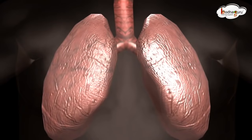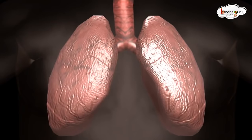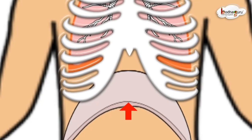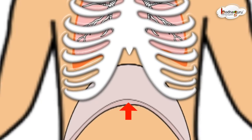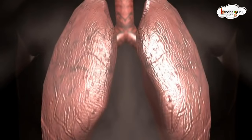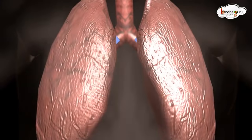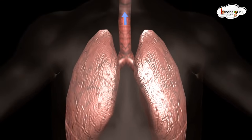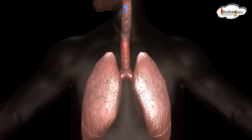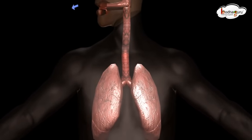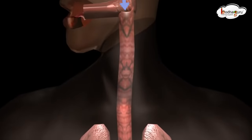जिससे lungs फूल जाते हैं। जब डायफ्राम ऊपर की ओर जाता है तो lungs पर ज्यादा दबाव पड़ता है और वायू lungs से बाहर निकल जाती है। वायू जिस रास्ते से शरीर में प्रवेश करती है उसी रास्ते से बाहर निकल जाती है — यानि lungs से bronchi में, फिर wind pipe में, फिर nasal cavity से होते हुए nostrils द्वारा शरीर से बाहर।